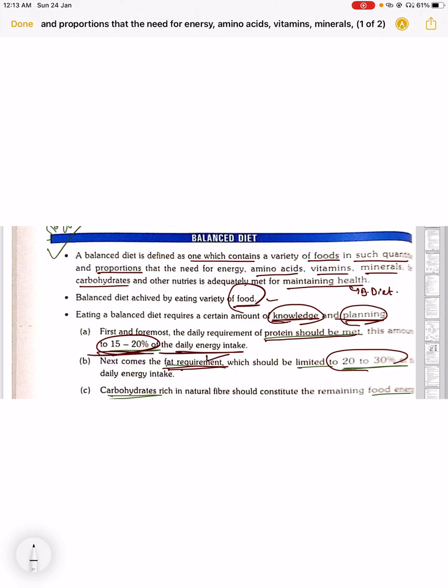And carbohydrate-rich natural fibers should constitute the remaining food. So maximum is the carbohydrate. 15 to 20 percent is your protein, and 20 to 30 percent fat should be there in your daily diet. This is all about balanced diet.